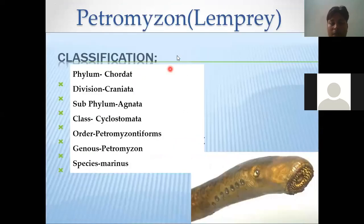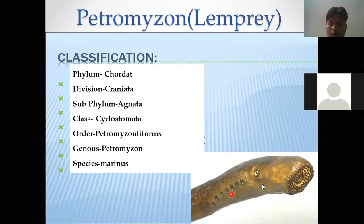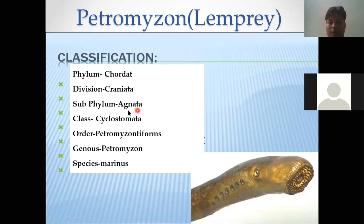You can see in the diagram that Petromyzon is attached to a fish. The mouth is attached to the host, but the back portion is free. The free portion moves in the water — this is why we call it the lamp-eel. In the classification: the cranium is present, covering the brain. The class is Cyclostomata, with a circular mouth as seen in the diagram.